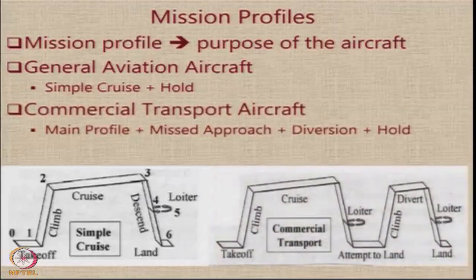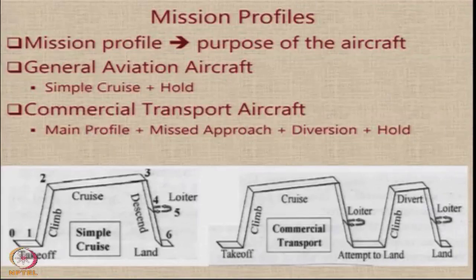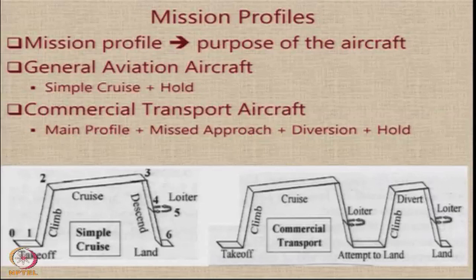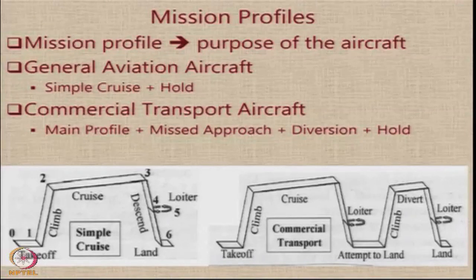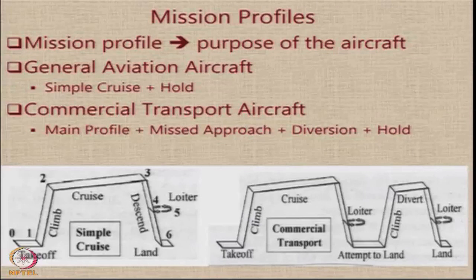For a commercial transport aircraft, the mission profile is slightly more complicated. Apart from the initial profile similar to the general aviation aircraft, you also have to keep a provision for one unsuccessful landing attempt. This could be because of an obstruction on the runway or due to weather, forcing you to abort the landing and divert to a nearby airport. You must have enough fuel to climb after an aborted landing, divert to a nearby location, approach again, and loiter — because even at that airport you may have to hold for some time — and then land. These requirements for loiter, diversion, and the second loiter are given by the airworthiness agencies essentially to ensure our safety.